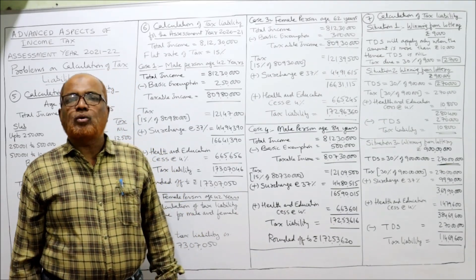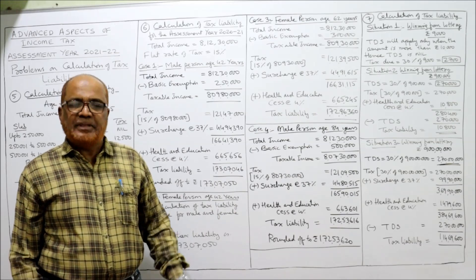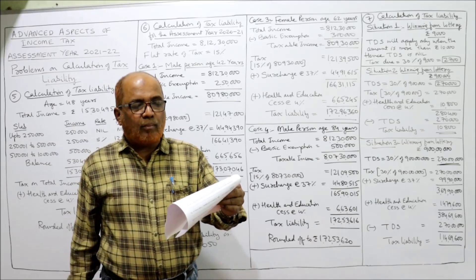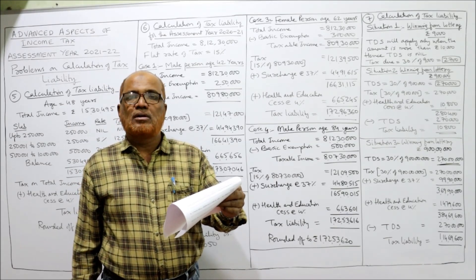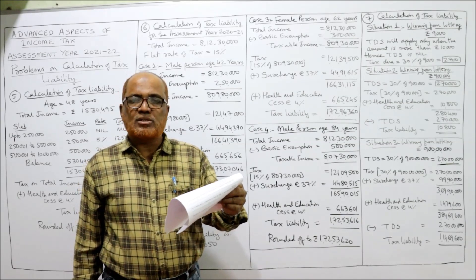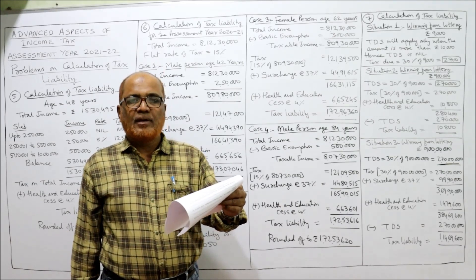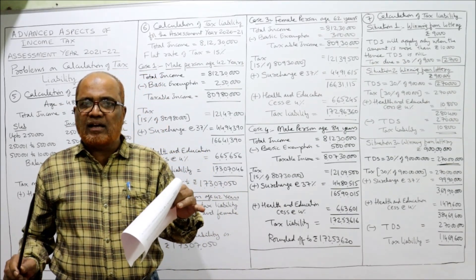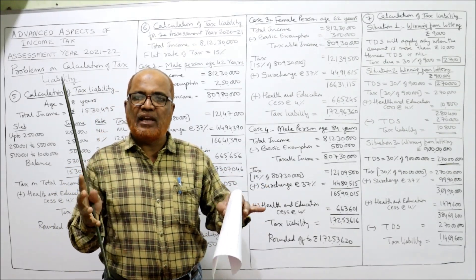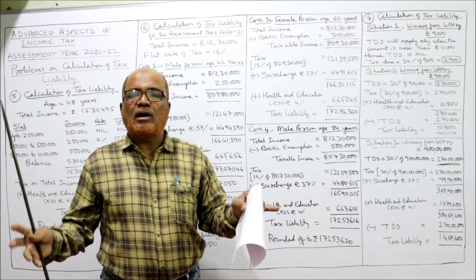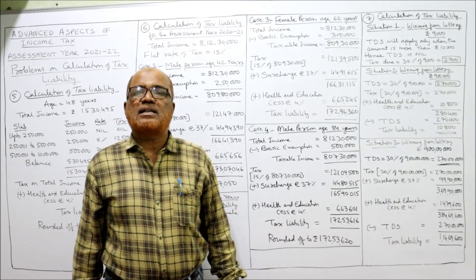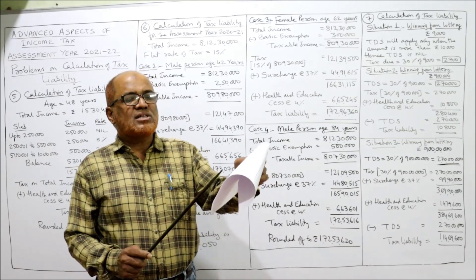I've explained each and every point on how to compute the tax liability. Next is Problem Number Seven: calculate tax liability and determine how much tax is deducted at source (TDS) in each of three situations, where income from other heads is nil — the SSC has only winnings from lottery, no other income. We need to find TDS and tax liability for each situation.